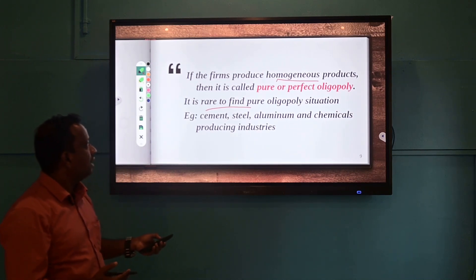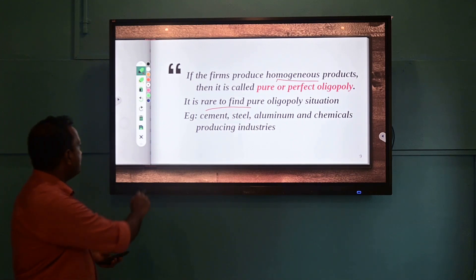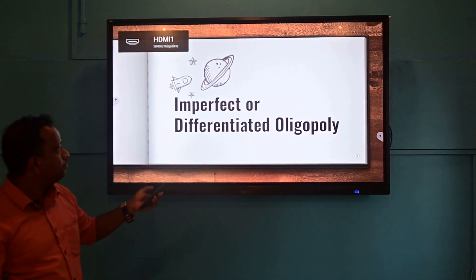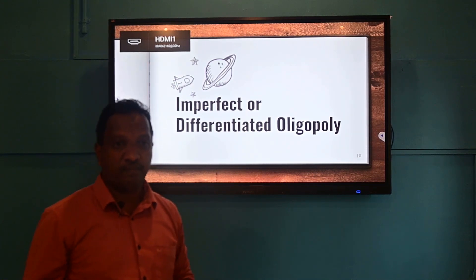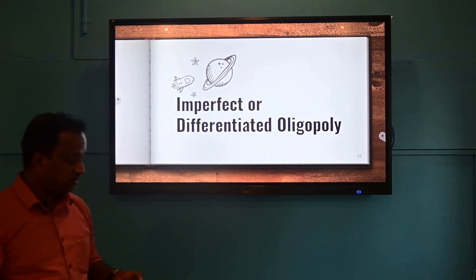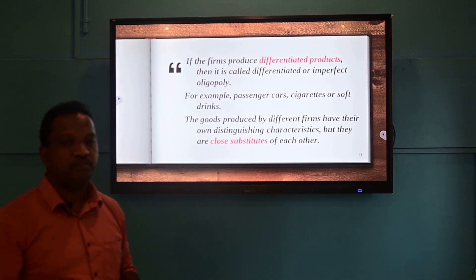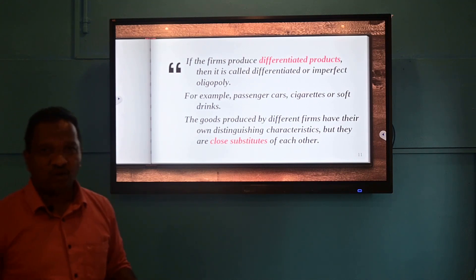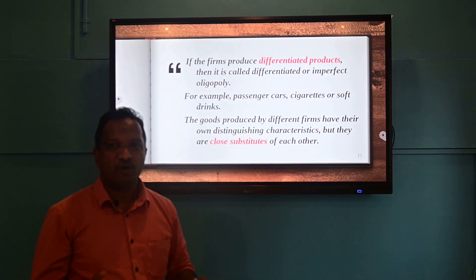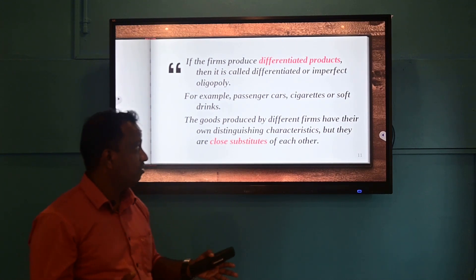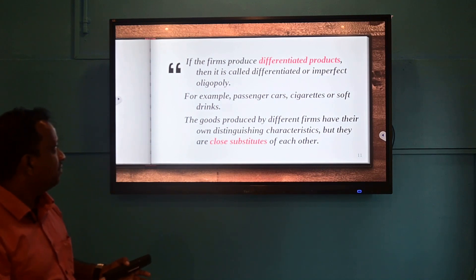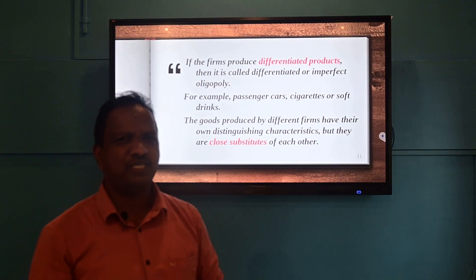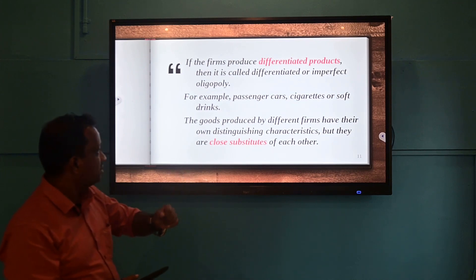Another type is differentiated or imperfect oligopoly, where firms produce differentiated products. Differentiation may be on the basis of colors, features, or special offers. When firms make the same commodity but add some differentiations or special features, that kind of oligopoly is known as differentiated oligopoly.